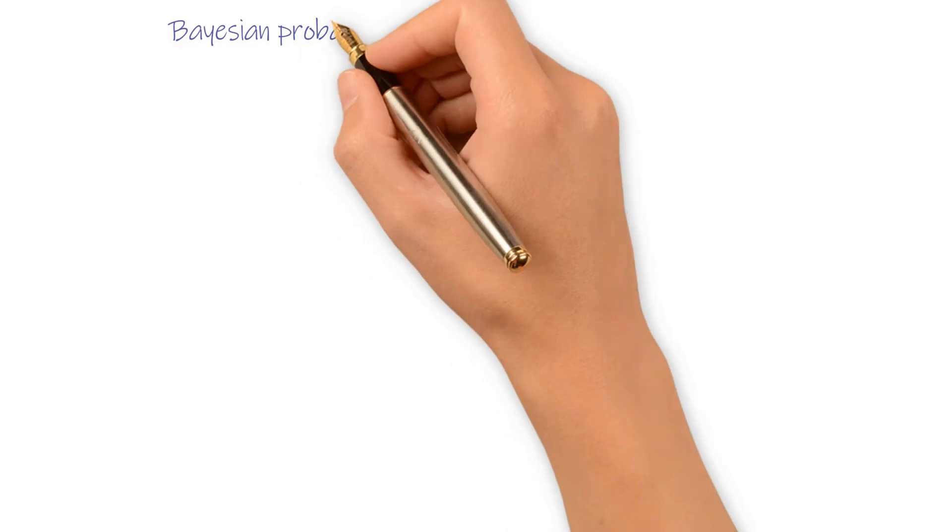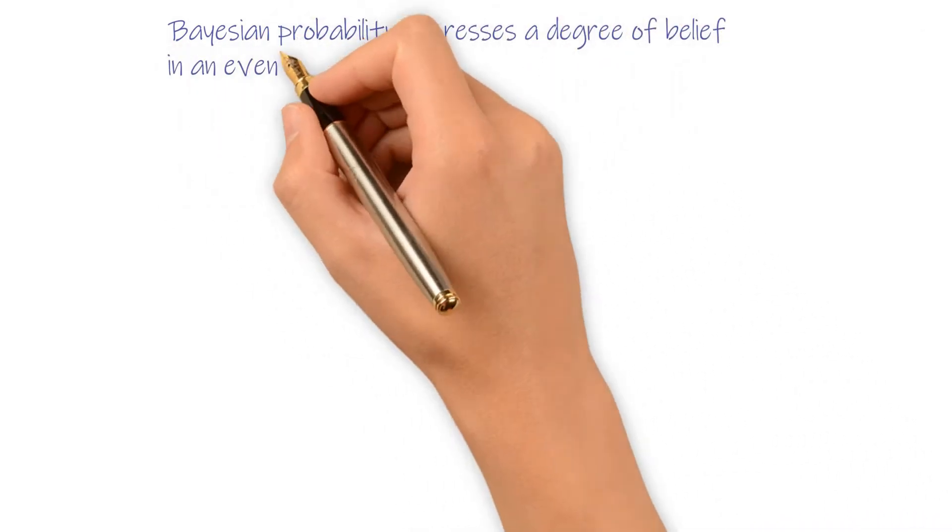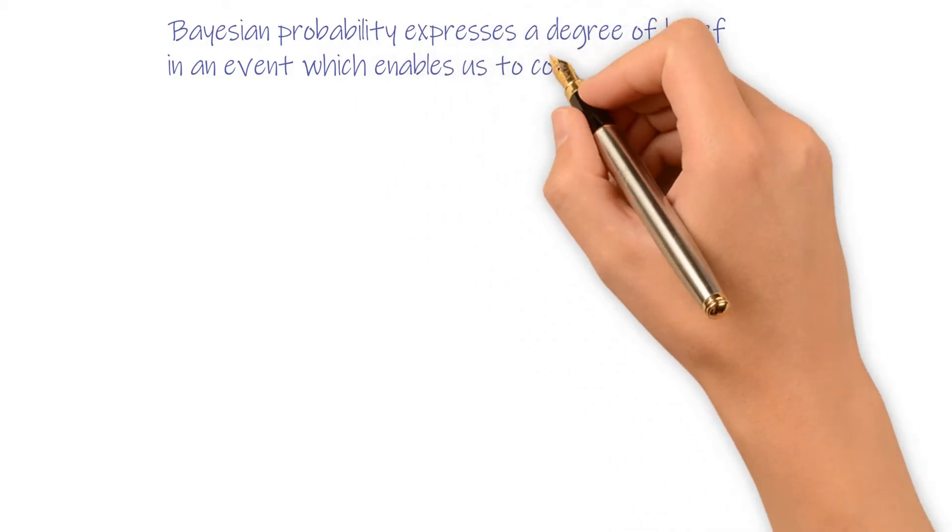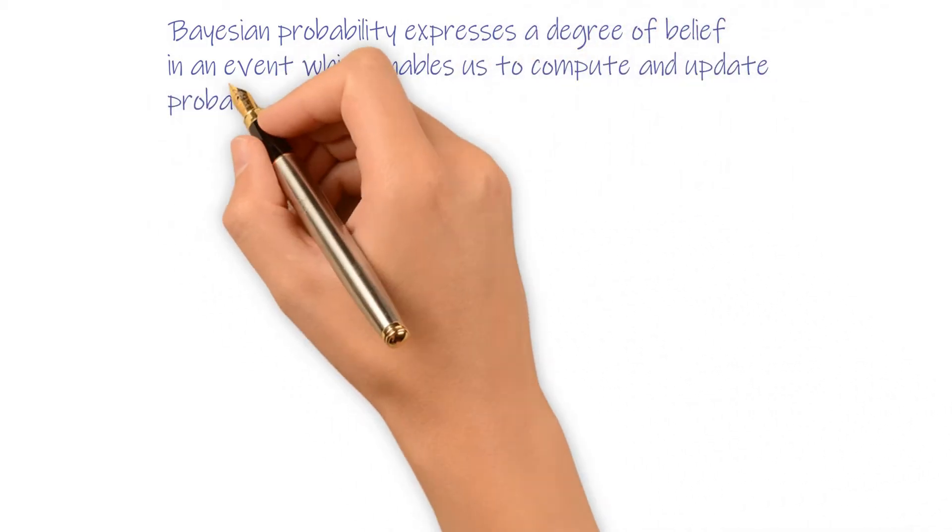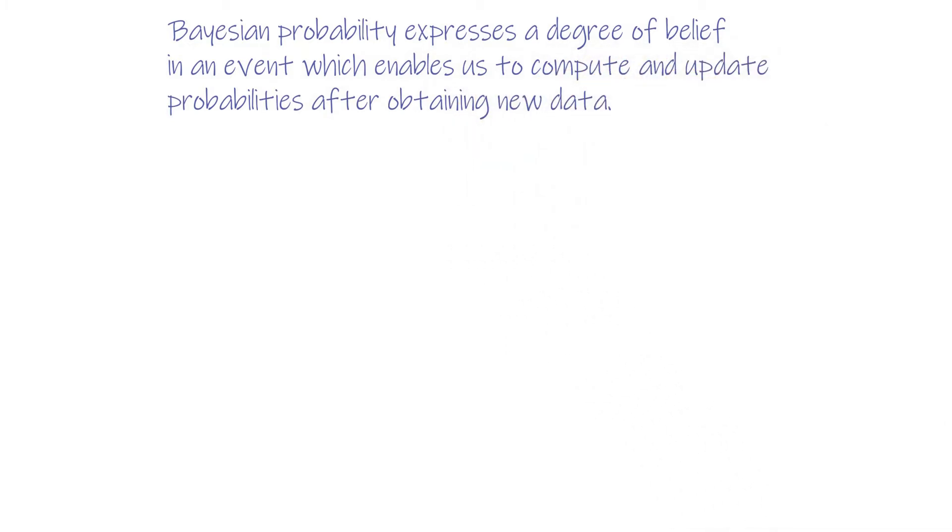It differs from a number of other interpretations of probability, such as frequentist interpretation. Bayesian probability expresses a degree of belief in an event which enables us to compute and update probabilities after obtaining new data. I'll explain it in the next five minutes.